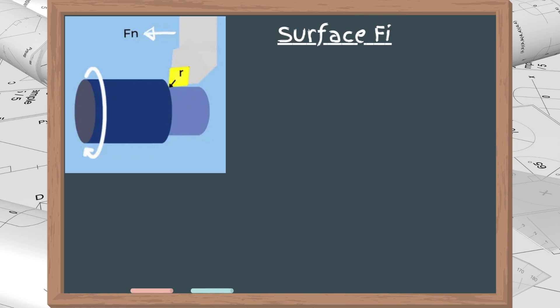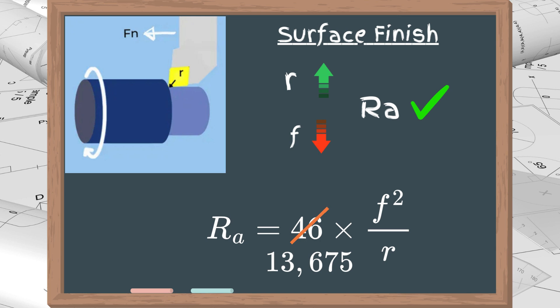The last formula we will explore is for surface finish, which depends on the feed rate and corner radius. A lower feed rate improves the surface finish, as does a larger corner radius. The formula for Ra in metric units is 46 times the feed rate squared divided by the corner radius. For imperial units, you should substitute 46 with 31,675.